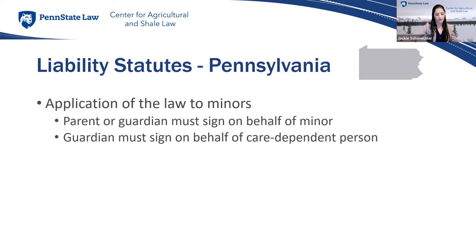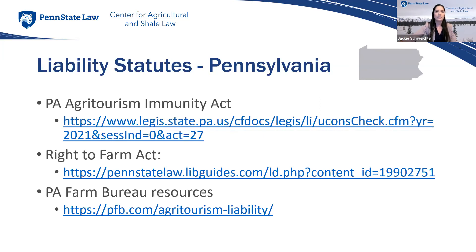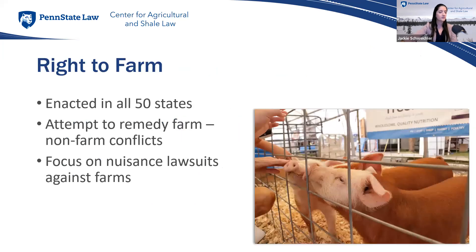Element four is signage: required warning signs must be posted at conspicuous locations on the property and must be at least three feet by two feet in size, placed so they're easily observed by participants. The sign language warns participants to read the agreement on their ticket and explains the operator will not be liable for injuries. For those interested in obtaining this signage, helpful information is listed on the Farm Viewer website.